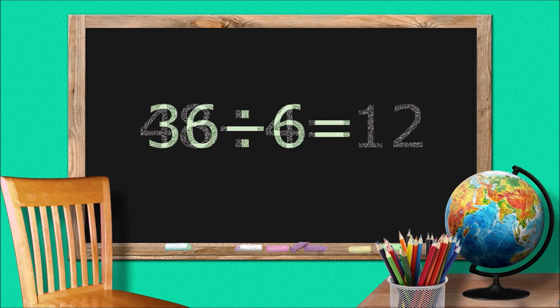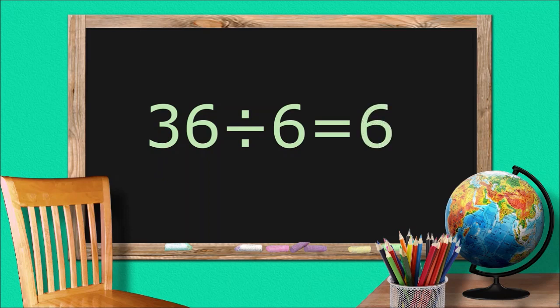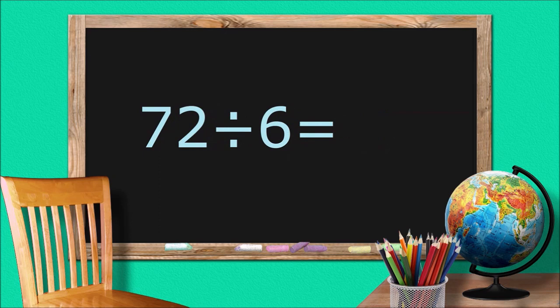Thirty-six divided by six equals six. Seventy-two divided by six equals twelve.